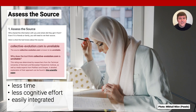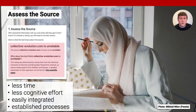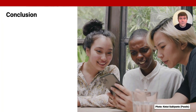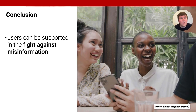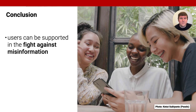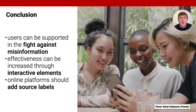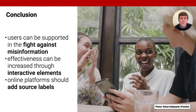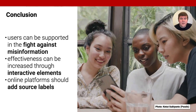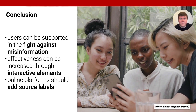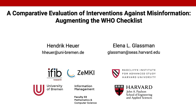Third, source labels can be easily integrated into existing user interfaces, both by those who operate a platform and by providers of third-party browser extensions. Fourth, there are existing and established jury processes that can be used to determine whether a new source is reliable or not. The most important finding is that users can be supported in the fight against misinformation. We also show that interactive elements can increase the effectiveness of the checklist components. Our most important design recommendation is that online platforms should add source labels. We encourage providers of platforms like Facebook, YouTube, Telegram, and TikTok to add democratically and transparently determined source labels to online platforms.